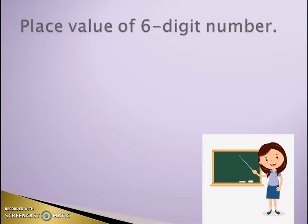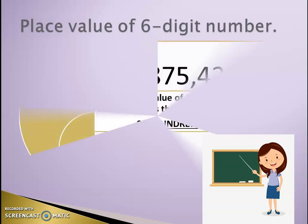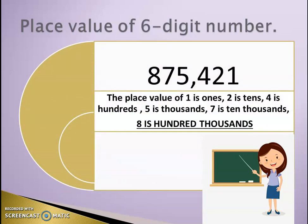Another example, place value of a 6-digit number. The place value of 1 is ones, 2 is tens, 4 is hundreds, 5 is thousands, 7 is ten thousands. But 8, that is the 6th digit, and its place value is hundred thousands.